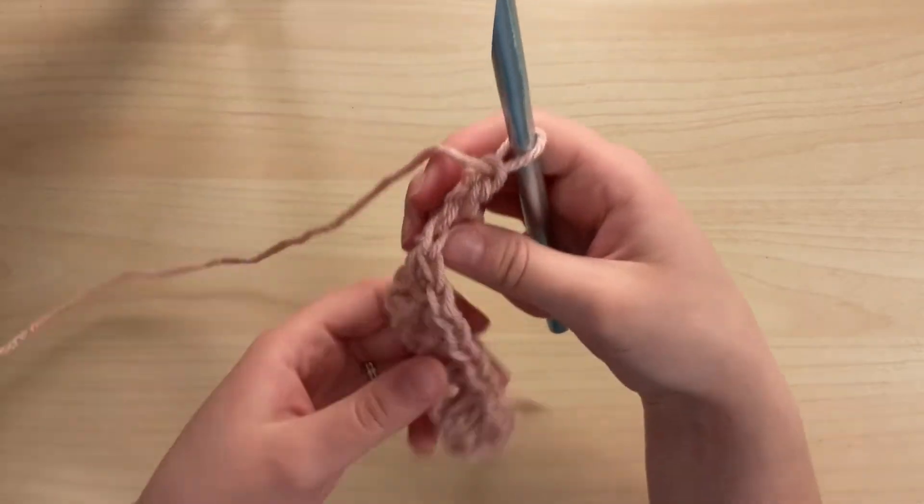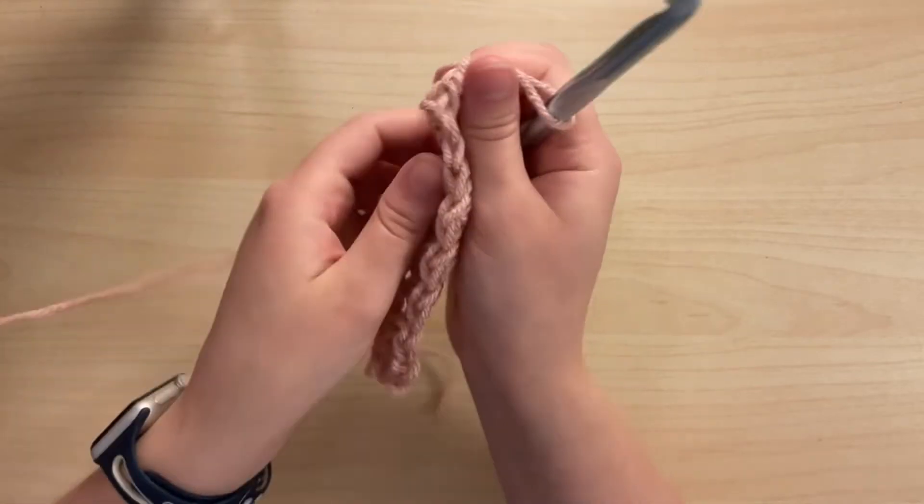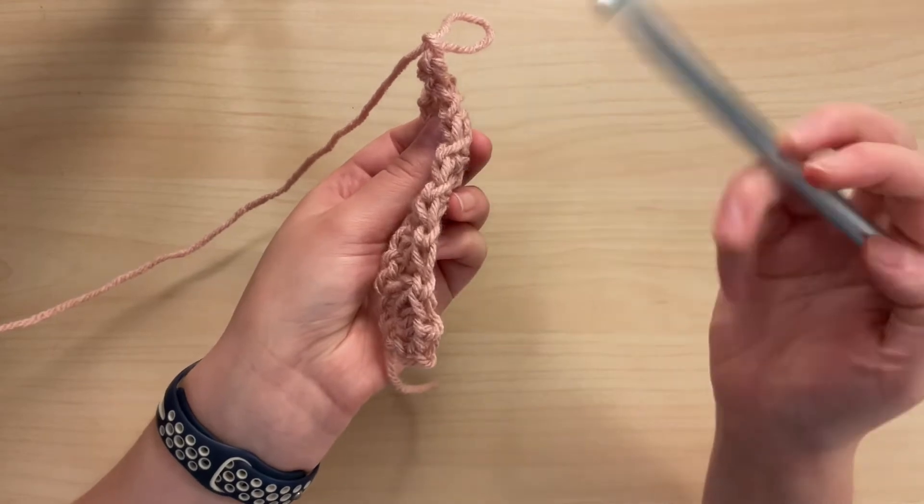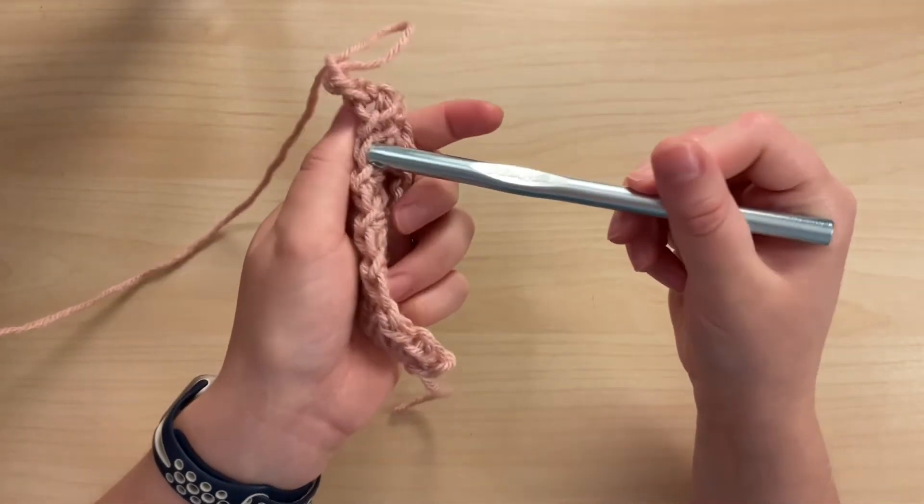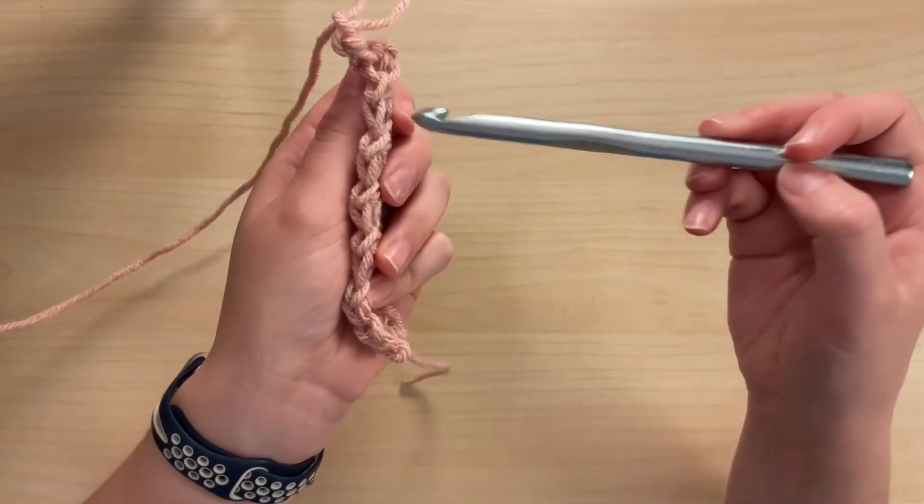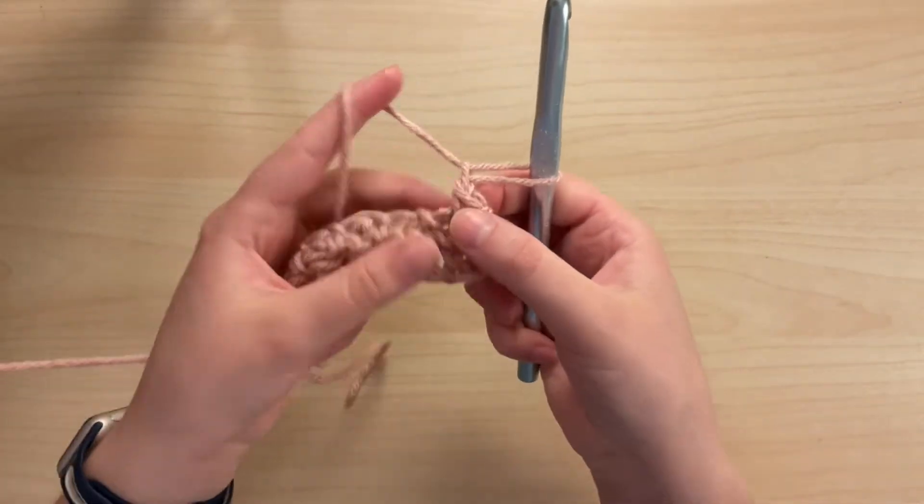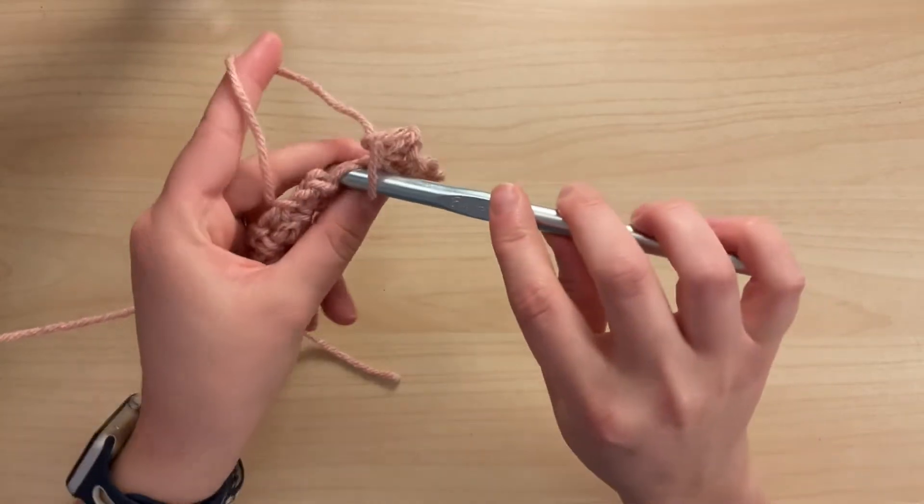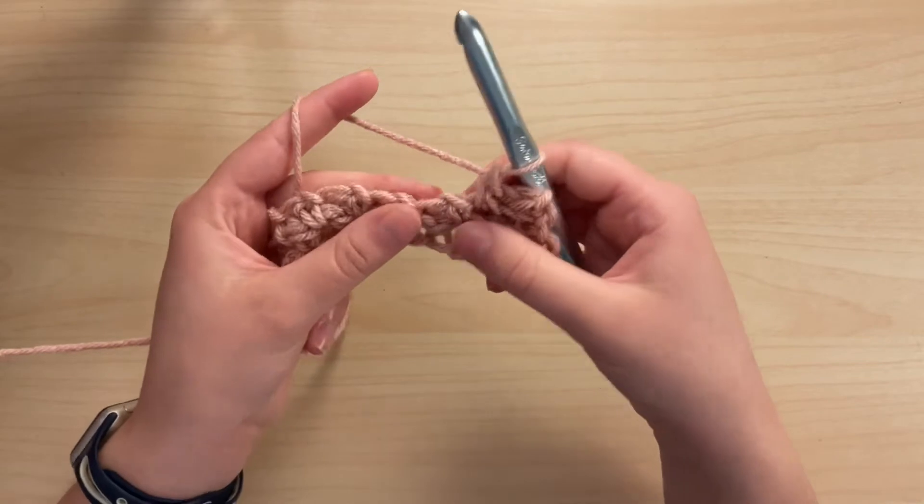Now how you can tell which stitches you're skipping and which ones you're working into is the chain one spaces from the row below are these little bumps right here or the ticks, and the single crochet two together stitches from the row below that we'll be placing a single crochet into are the ones that look flatter or more long. So after you've placed your first single crochet and chain one, we'll skip this chain and place a single crochet into that stitch from the row below.